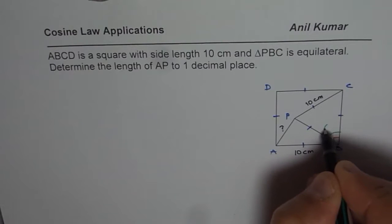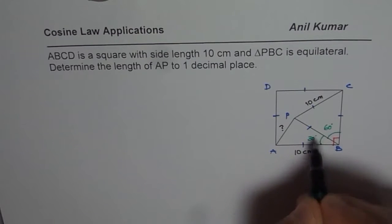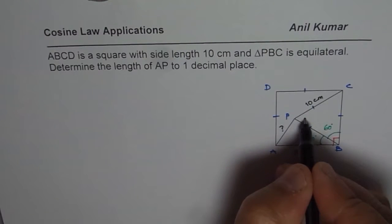So this angle is 60 degrees. We are left with 90 degrees, so we have a 30 degree angle here. Now we know two sides. Both the sides are in fact 10 cm.